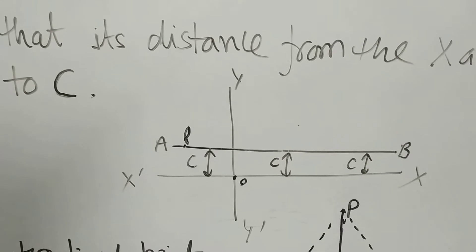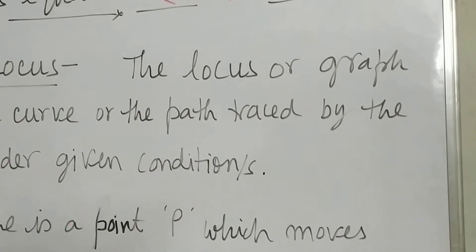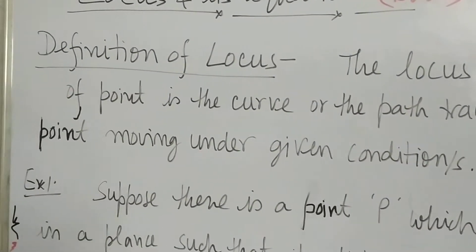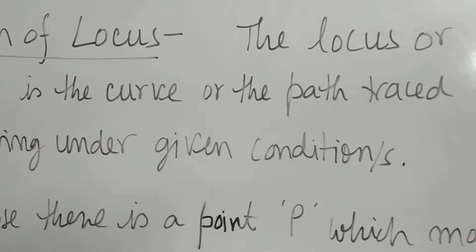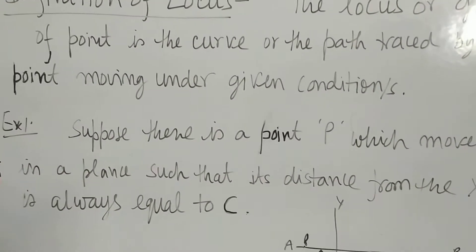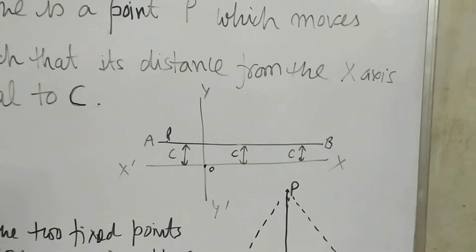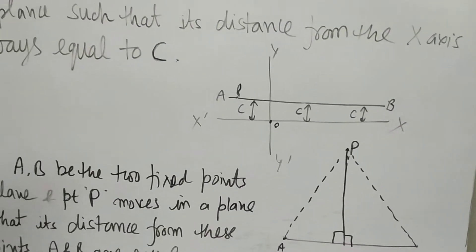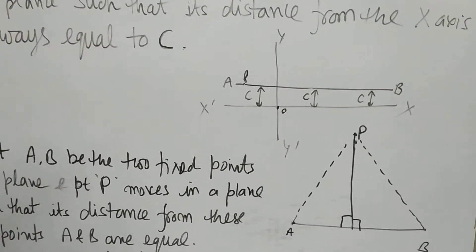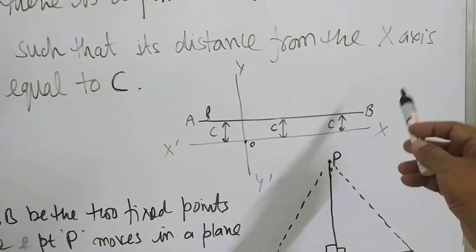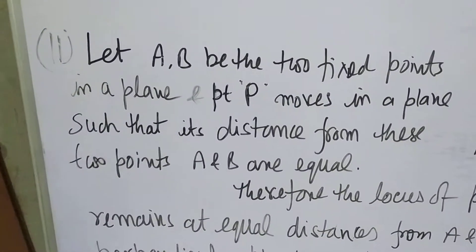You can see the definition says the same: the locus or graph of a point is the curve or the path traced by the point moving under given conditions. In this case, point P has satisfied the condition that it remains always at a distance C from the x-axis because it moves on the line AB. Now let us see the second example.